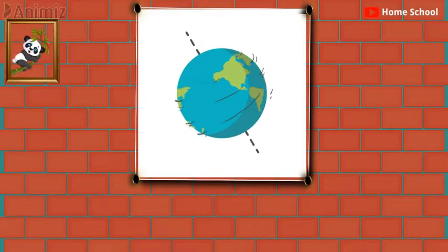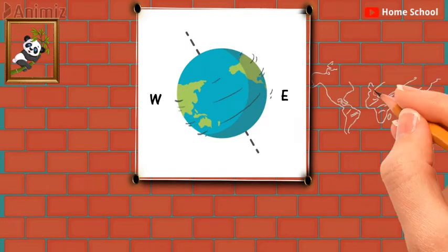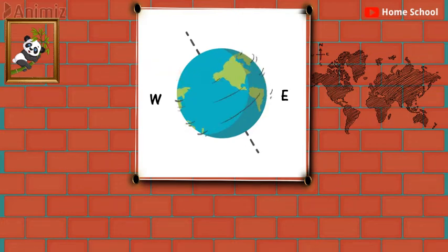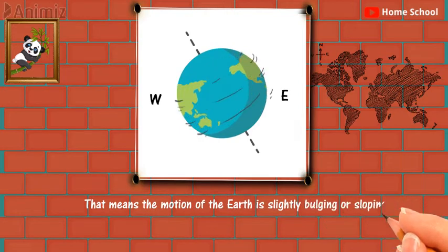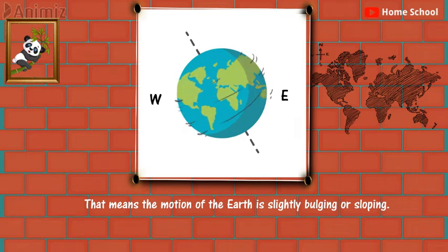We know the Earth rotates from west to east direction, and along with the Earth, all the places on Earth are also changing their direction. As you can see here, the Earth rotates in a tilted position and not exactly upright. That means the motion of the Earth is slightly bulging or sloping. And if we draw an imaginary